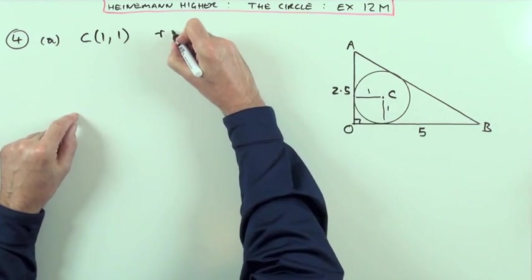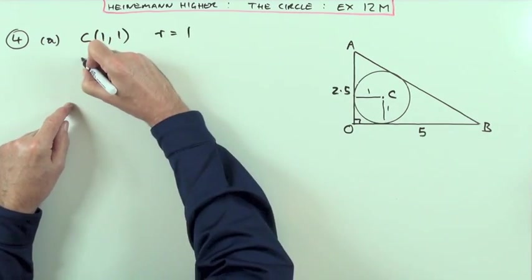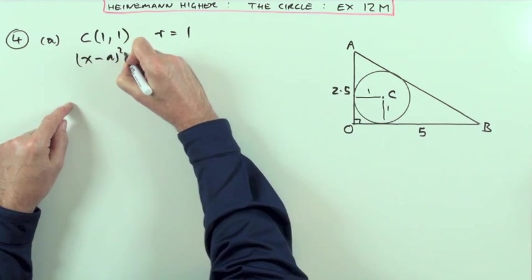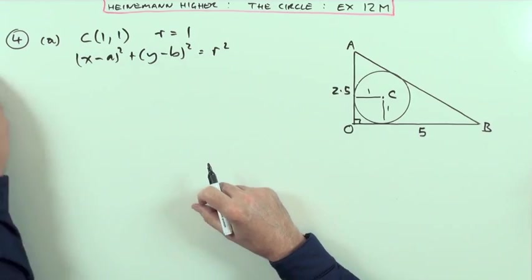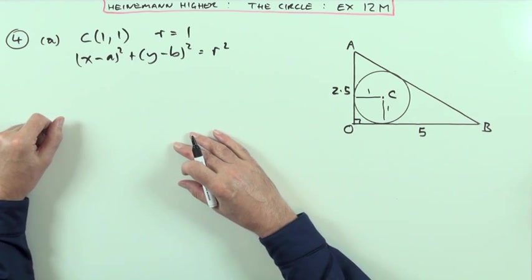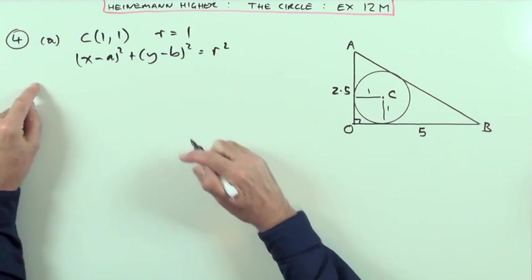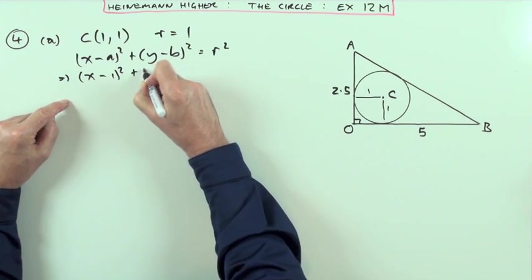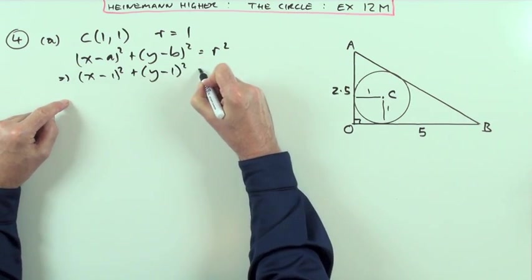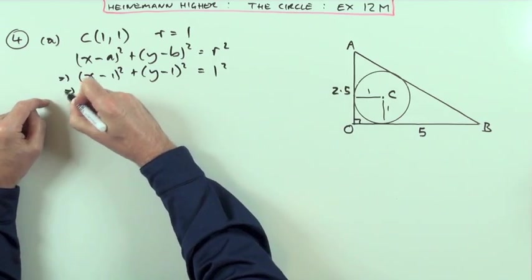And the other thing that's said was the radius is one, so immediately you can just feed it into (x-a)²+(y-b)²=r², the transformed formula for the equation of the circle. Feeding those numbers in means you've got (x-1)²+(y-1)²=1².